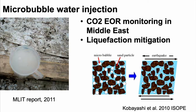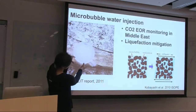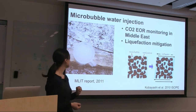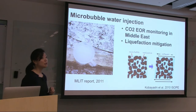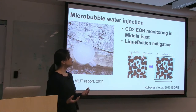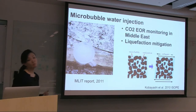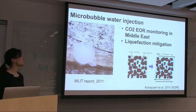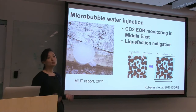Now we'll discuss estimating velocity change in the real world using microbubble water injection data. Microbubbles are a mixture of water and very small air bubbles, 100 to 100 micrometers in size. The mixture contains less than 1% air. The injection was performed to prepare for CO2 monitoring in the Middle East, funded by the oil and gas industry. Coincidentally, microbubble water injection has also been considered for liquefaction mitigation in Japan.